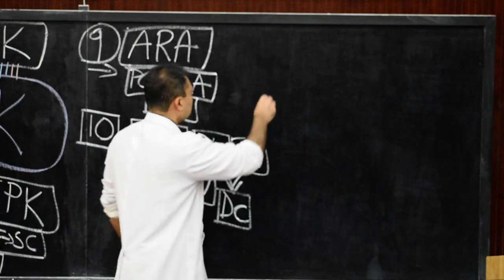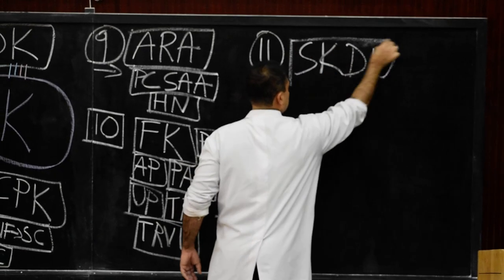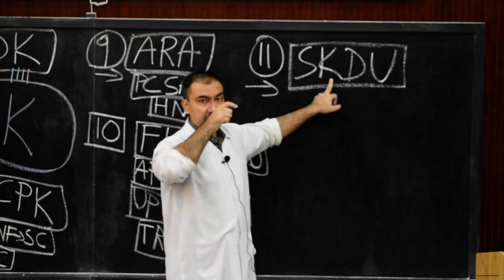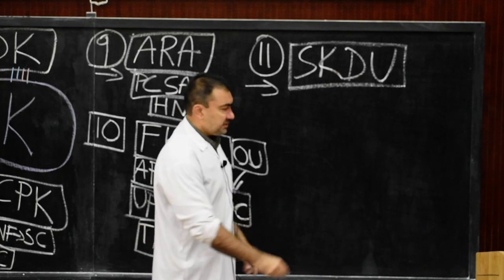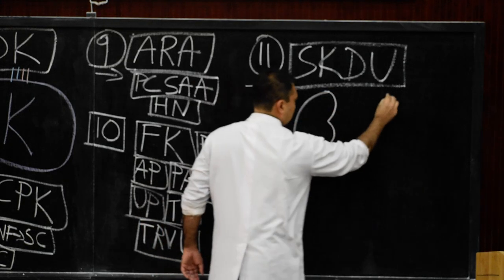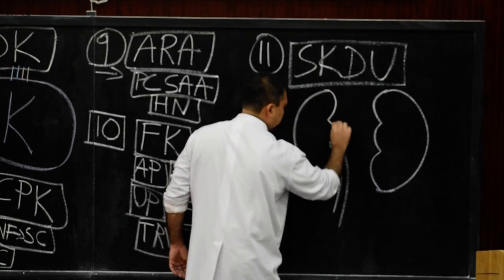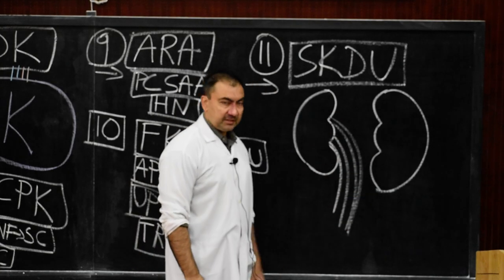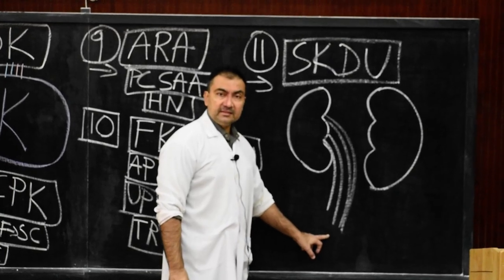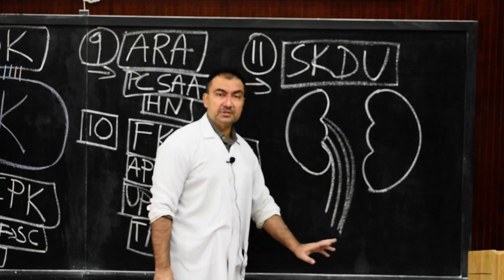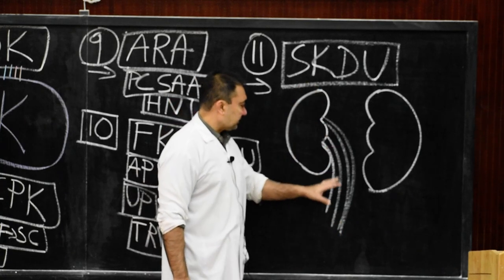Anomaly number 11 is single kidney but with double ureter. This is also an anomaly which can be found in routine cadaveric dissection, where there is one kidney but the presence of double ureter. Both ureters pass into the bladder, where the lower ureter will open at its normal position in the bladder, but the upper ureter will open at a lower, abnormal position in the trigone of the bladder.